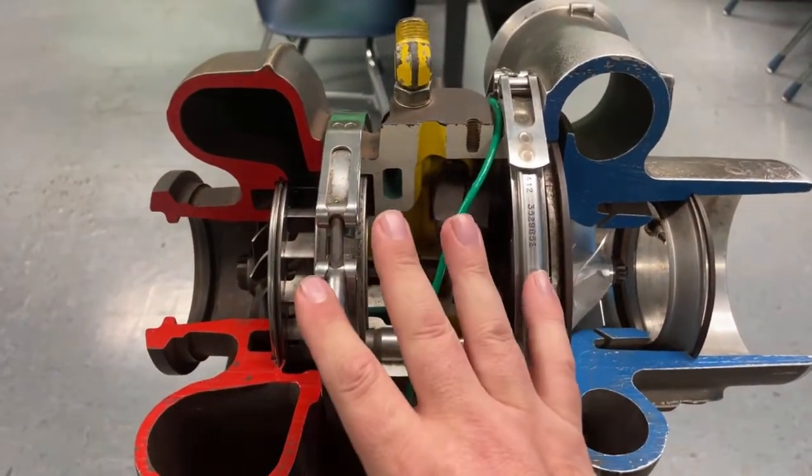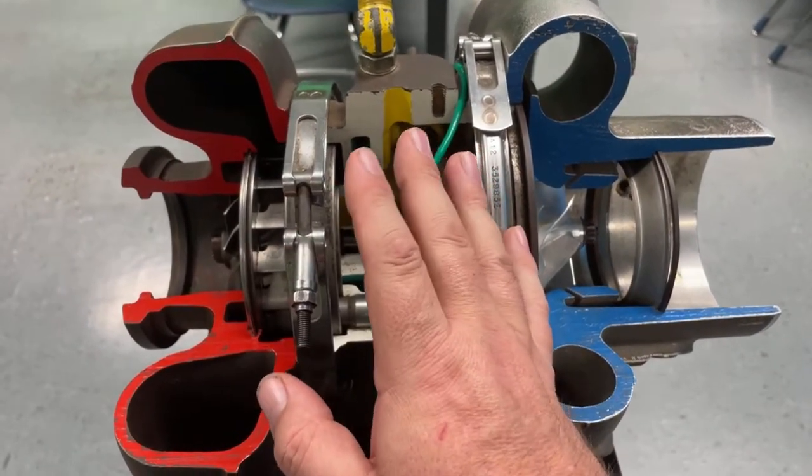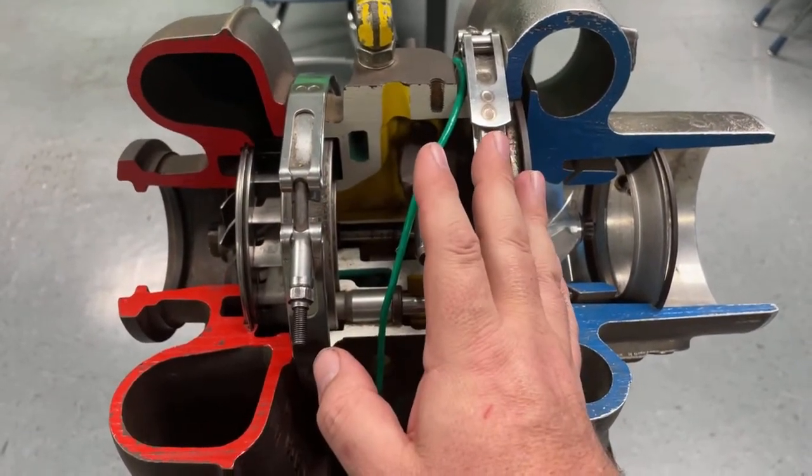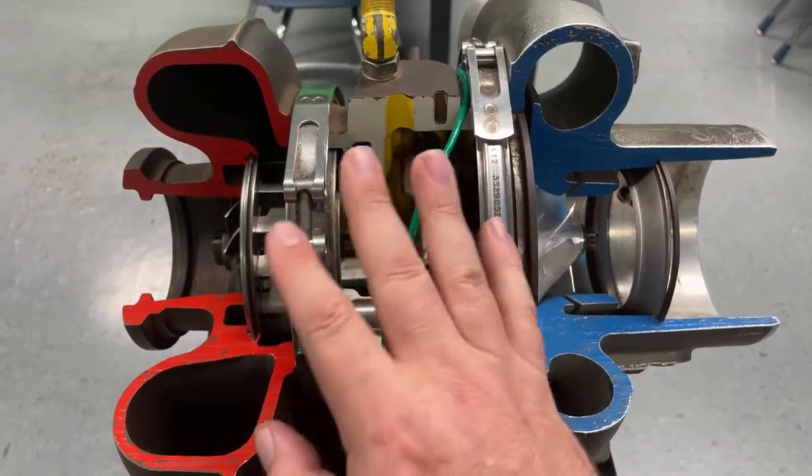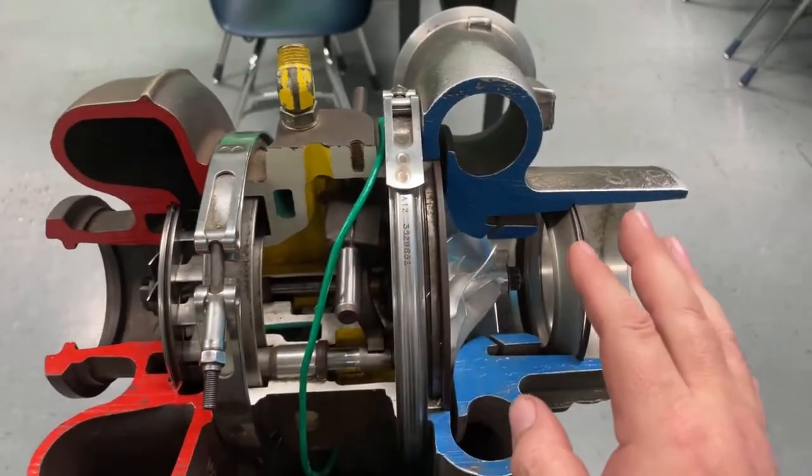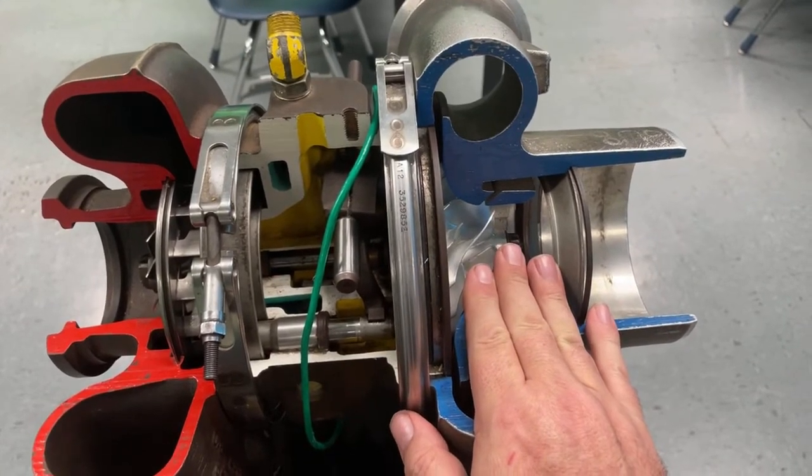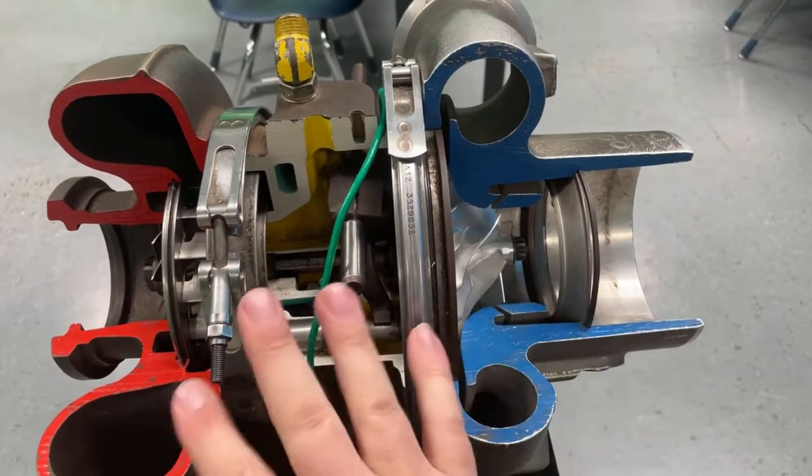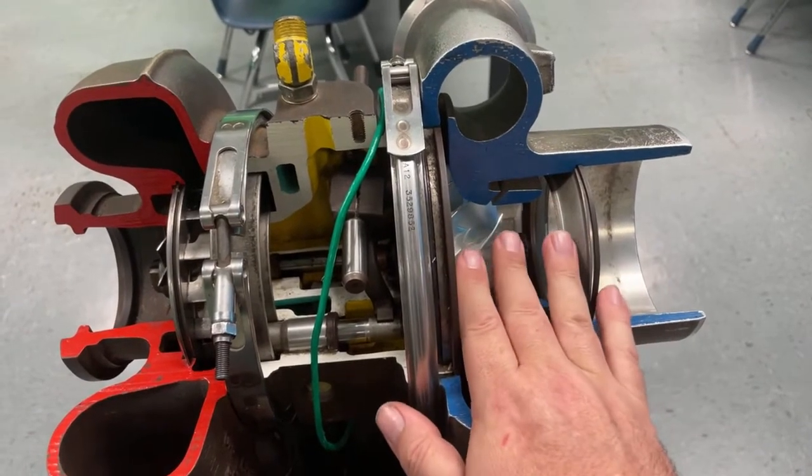So EGR is when exhaust gas goes into the intake and it displaces oxygen in the cylinder, which reduces combustion temps and helps you prevent emissions like NOx. So what happens is that on the intake side, you have boosted air in the intake manifold going to the cylinders, and it can be kind of hard for exhaust to force its way into that intake stream because of the boost pressure.